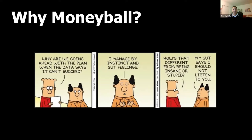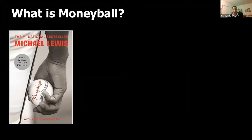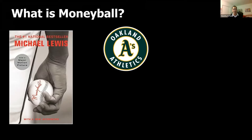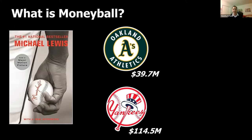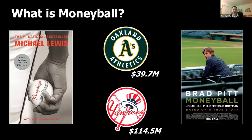So what is Moneyball? It's based on a book written by Michael Lewis in 2003 about the Oakland A's — a small market team with a small payroll that went up against teams like the Yankees, whose payroll was easily double what the Oakland A's had. It was a successful book, and in 2011 Sony made a movie starring Brad Pitt. As a poll question — if you've read the book, type 'book'; if you've watched the movie, type 'movie'; if both, type 'both.' I see a lot of 'movie' responses. I actually personally thought the book was better than the movie.